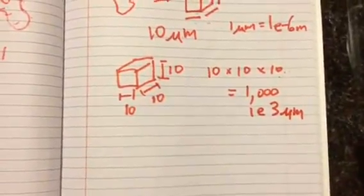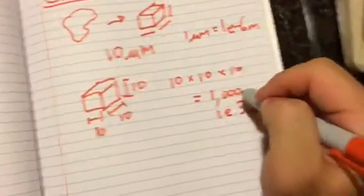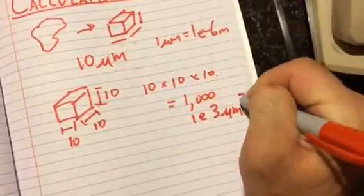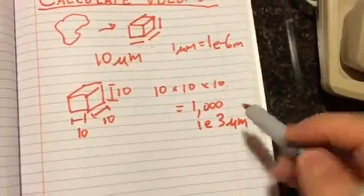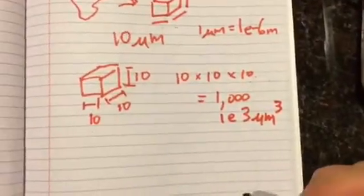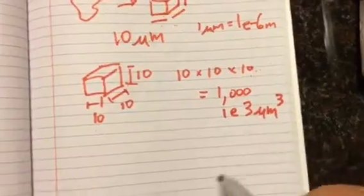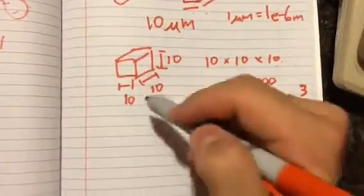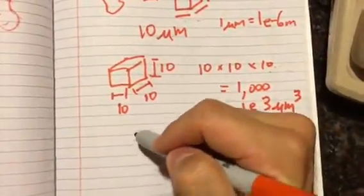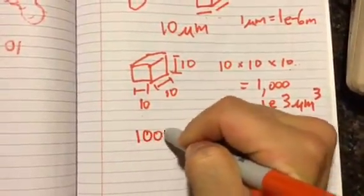But the question throws you for a loop and it wants you to express your answer in larger units of meters cubed. And I'm sorry, this should be microns cubed because we times microns by microns by microns, so our unit is cubed. So then the question is how do I turn microns cubed into meters cubed? Well this is another unit conversion, but it's a little different than the unit conversions that we did previously because it's a volume. So this is the way I like to tackle these problems. Start out with, so we have 1000 microns cubed.